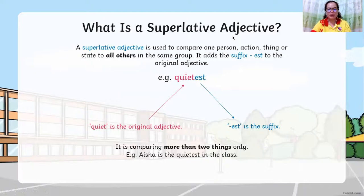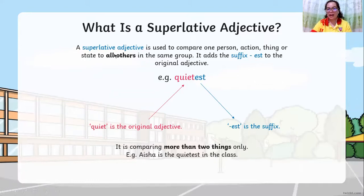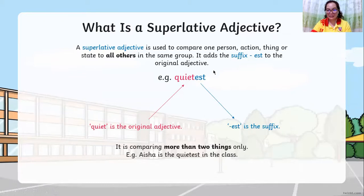What is a superlative adjective? A superlative adjective is used to compare one person, action, thing, or state to all others in the same group. It adds the suffix -est to the original adjective.